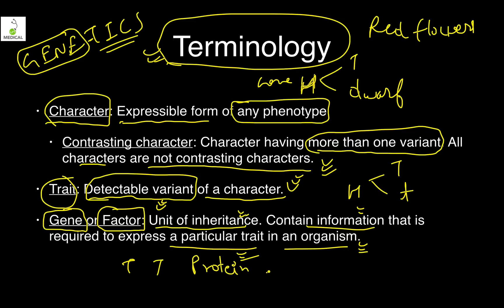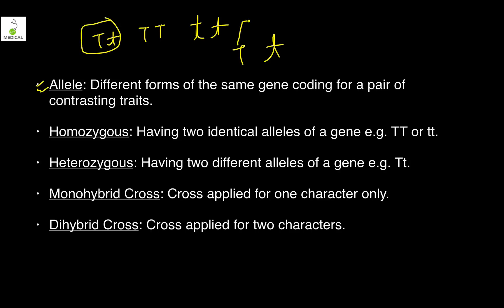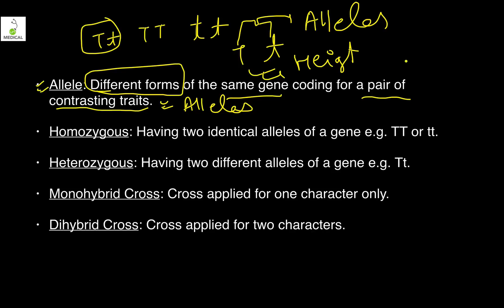A gene, when transcribed and translated, results in production of proteins which produce that particular trait. An allele refers to the two variants of a particular gene — for example, capital T and small t are alleles coding for the same character, height. They are different forms of the same gene, coding for a pair of contrasting traits. For example, R and W are two alleles of the same gene coding for flower color.